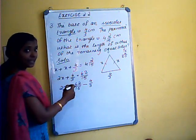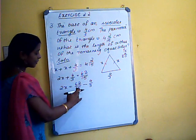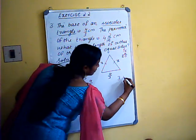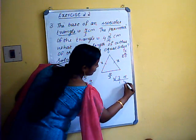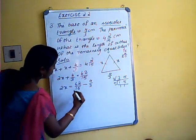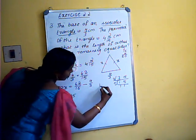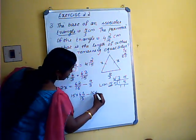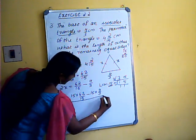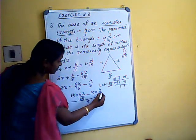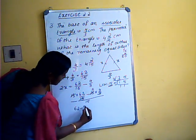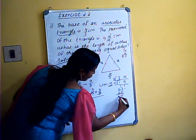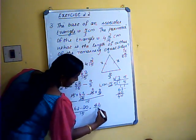The denominators are different. The LCM of 15 and 3 is 15, since 3 is a factor of 15. Multiplying through by 15: 15 into 62/15 cancels to give 62, and 15 into 4/3 gives 5 times 4 equals 20. So 2x equals 62 minus 20 over 15, which is 42/15.